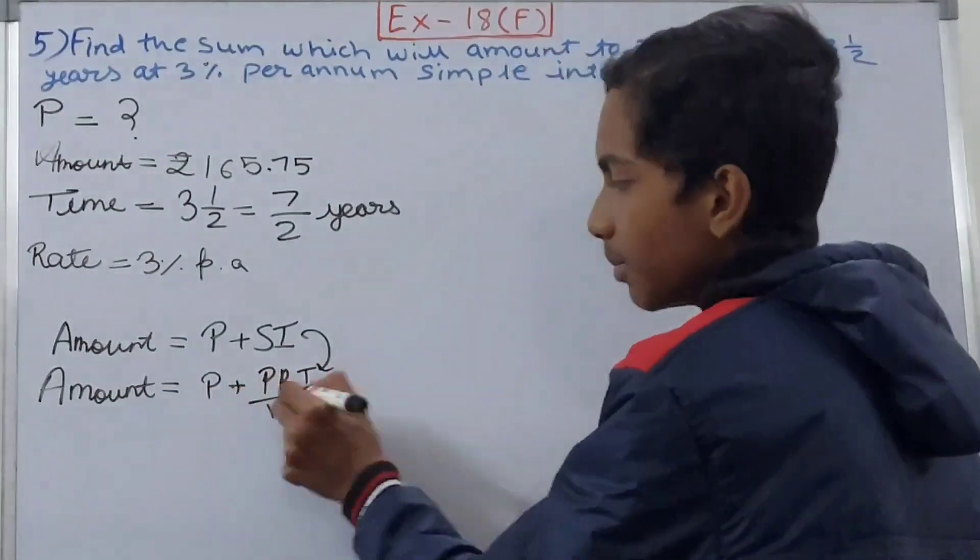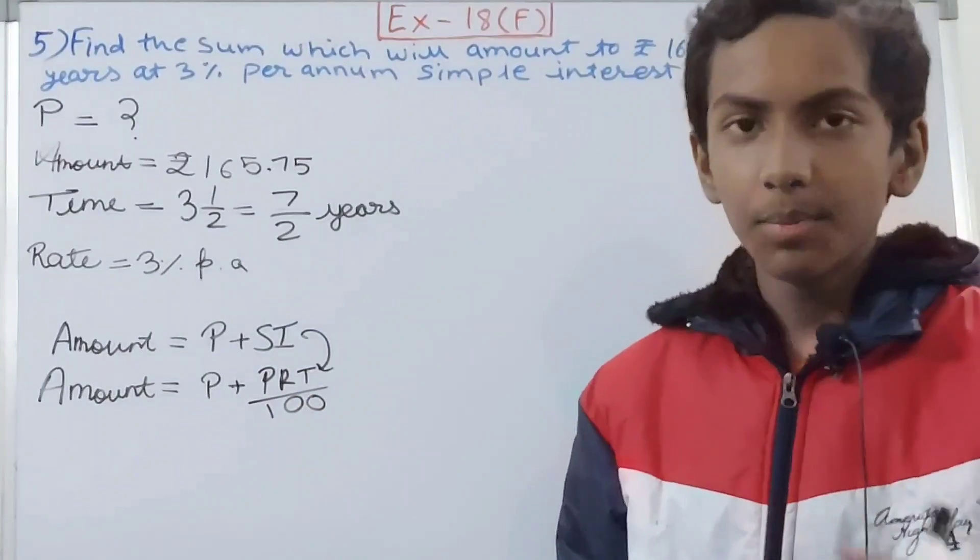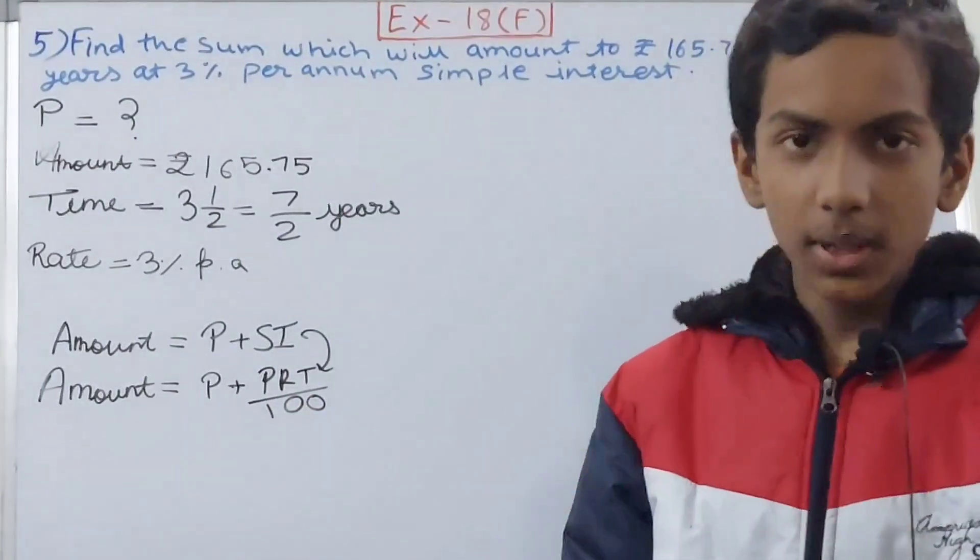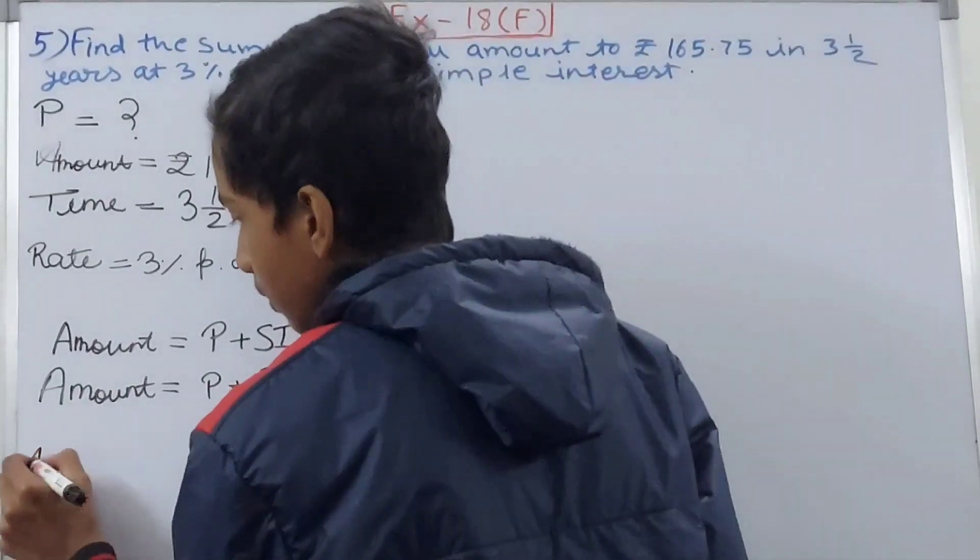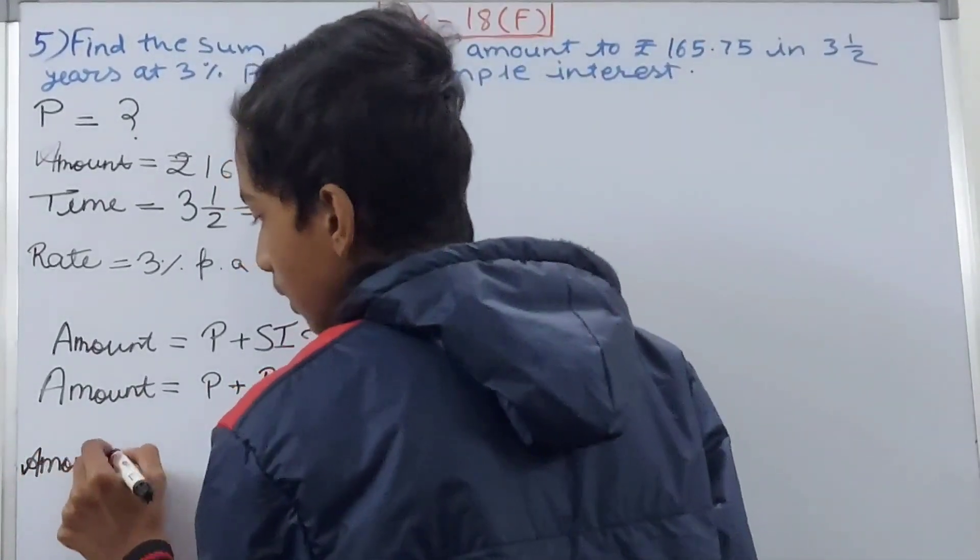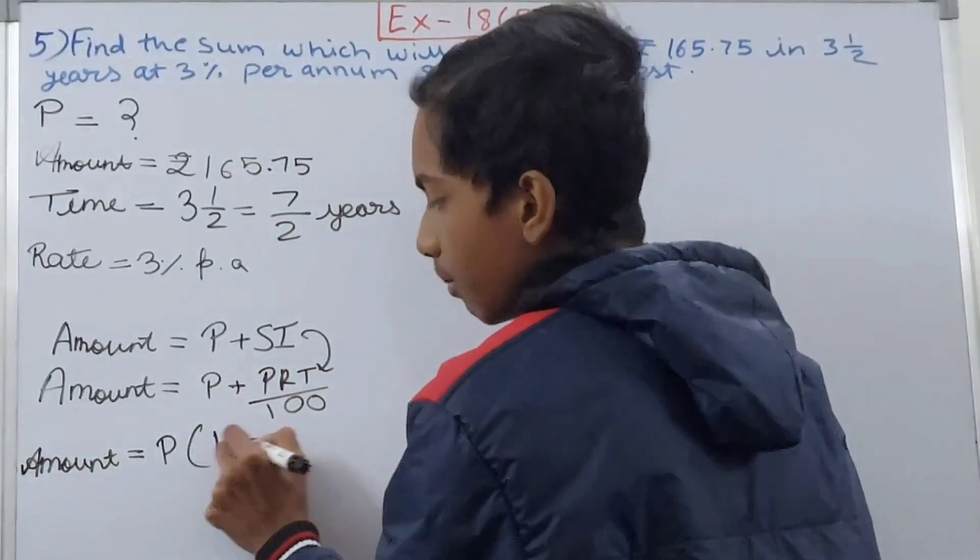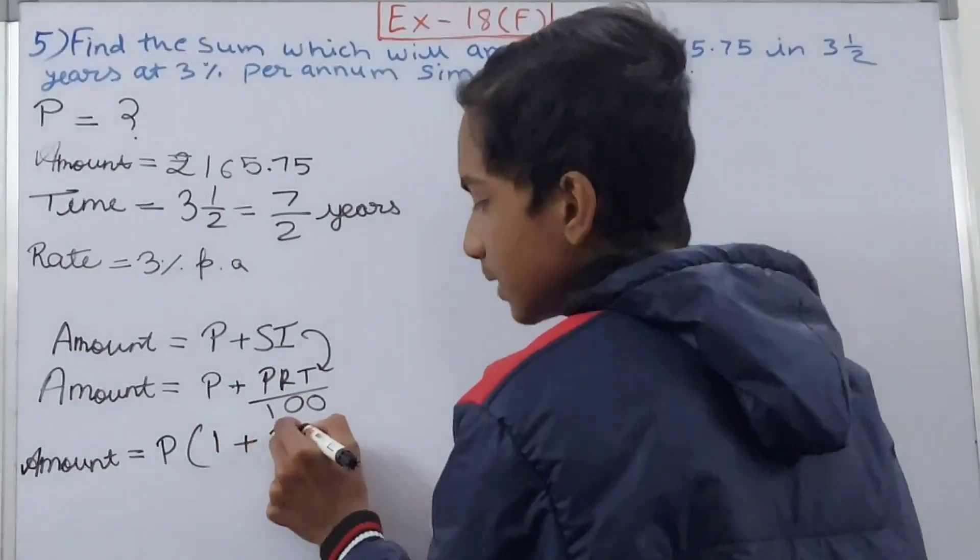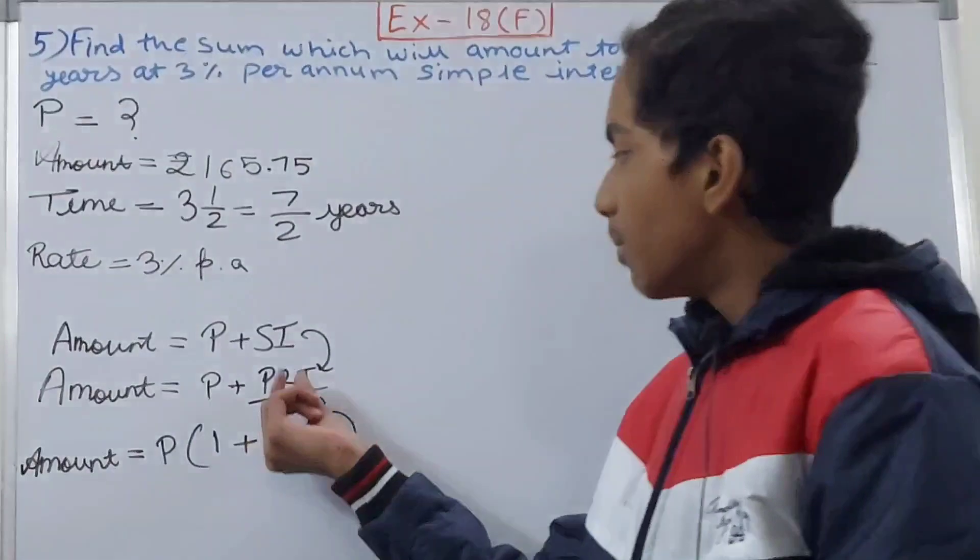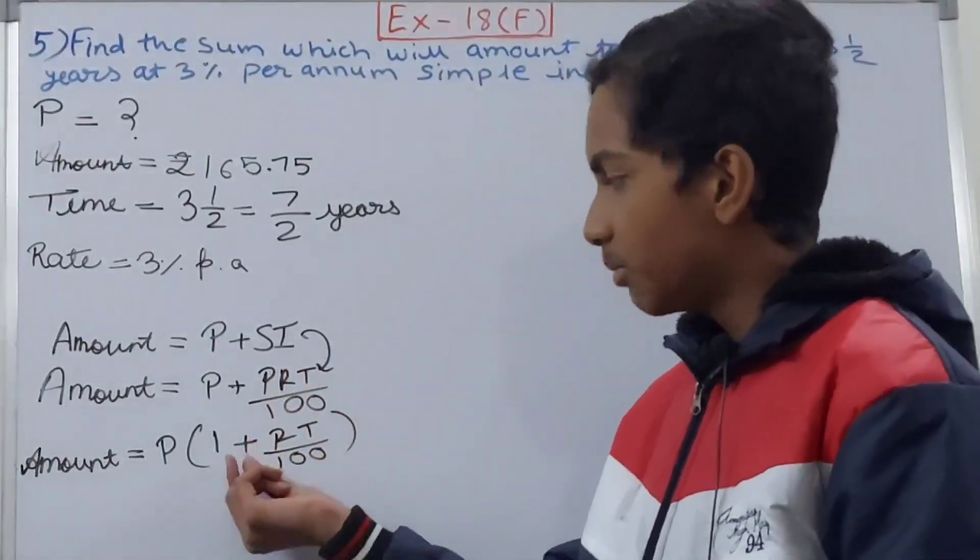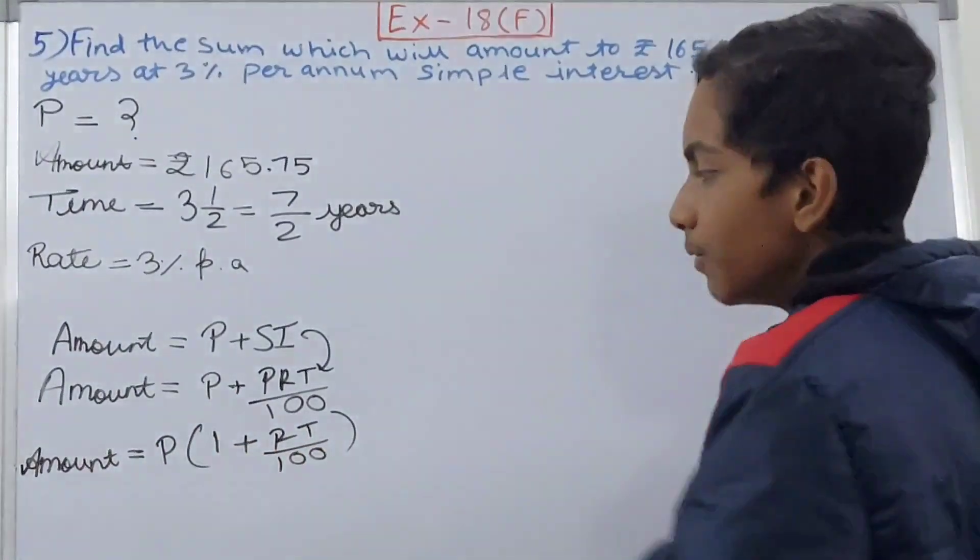P is coming two times. For clearing this problem, we assume one P as 1 and the other principle as the variable. So the amount equals P in brackets: 1 + RT/100. This P becomes 1, this P as it is, and rest is the same.